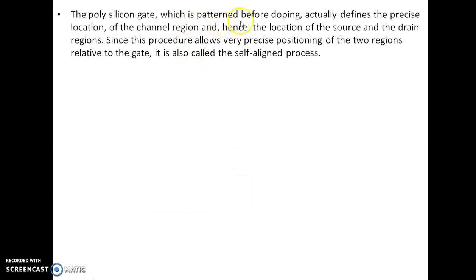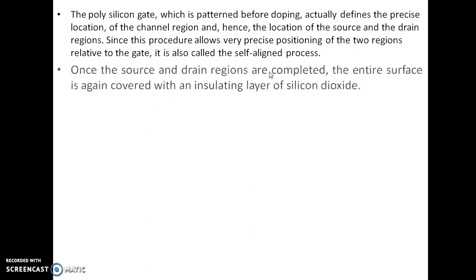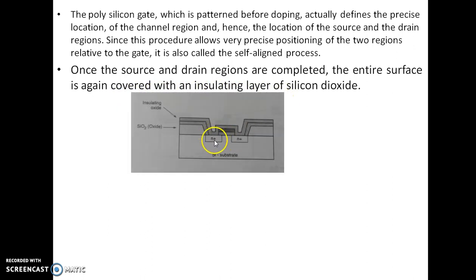The polysilicon gate, which is patterned before the doping, actually defines the precise location of the channel region and hence the location of the source and drain regions. Since this procedure allows very precise positioning of these two regions relative to the gate, it is called the self-aligned process. Once the source and drain regions are completed, the entire surface is again covered with an insulating layer of silicon dioxide.